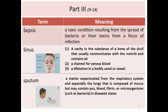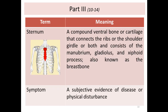Sputum is matter expectorated from the respiratory system, especially the lungs. It is composed of mucus but may also contain pus, blood, fibrin, or microorganisms such as bacteria in a disease state. Sternum is a compound ventral bone or cartilage that connects the ribs or shoulder girdle, colored red in the diagram.